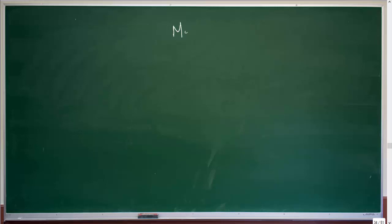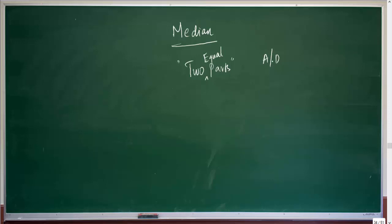Median is the middlemost item in an arranged series of data. That series can be either in ascending or descending order. When you find the median, you are actually splitting the series of data into two equal parts. Median will split the series into two equal parts.